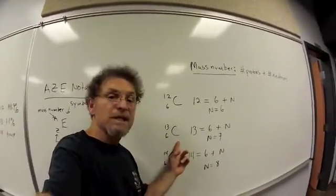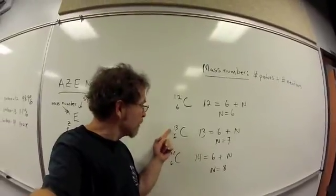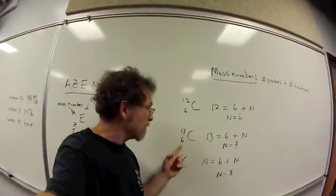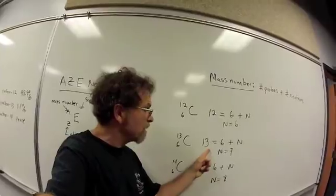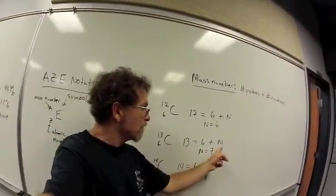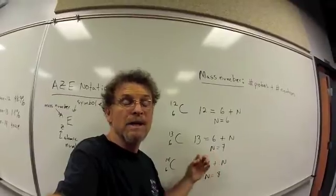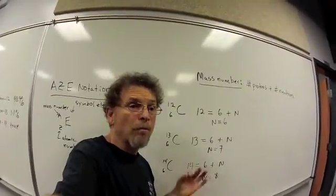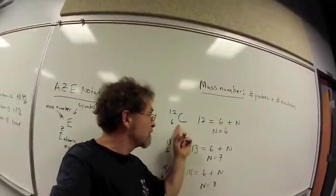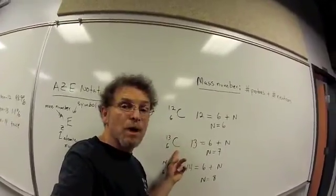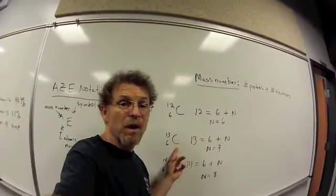Similarly, C-13 has a mass number of 13 and an atomic number of 6. When we set up the equation and solve for N, we see that C-13 has got 7 neutrons. One more neutron than C-12 did. So this particular isotope is heavier than C-12.